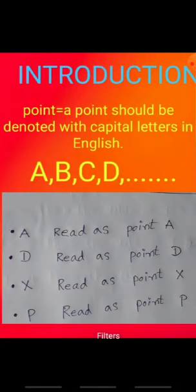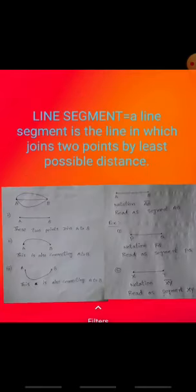Point. A point should be denoted with capital letters in the English alphabet — A, B, C, D, E, and so on. For example, point A is read as 'point A'. Point D is read as 'point D'. Point X is read as 'point X'. Point P is read as 'point P'. Any capital letter can be used.